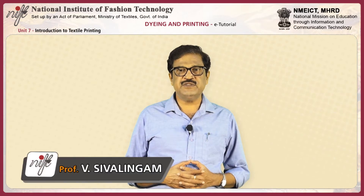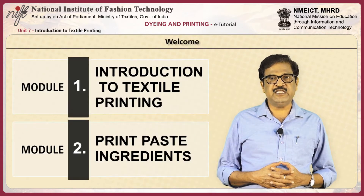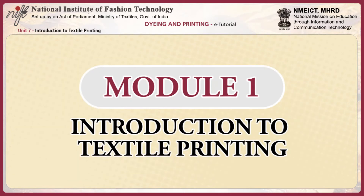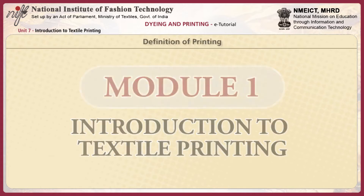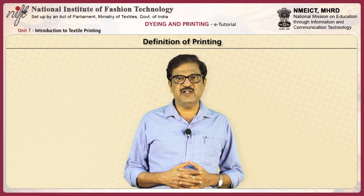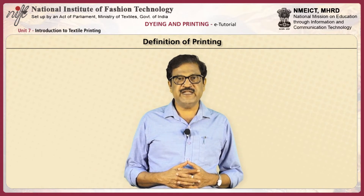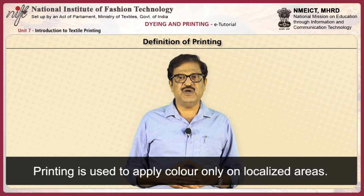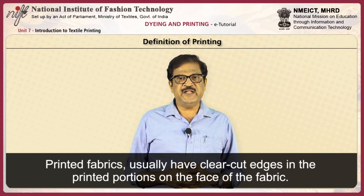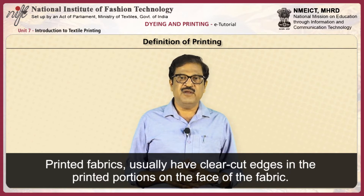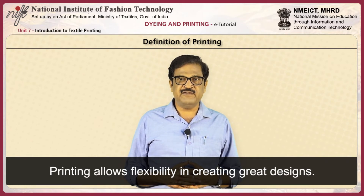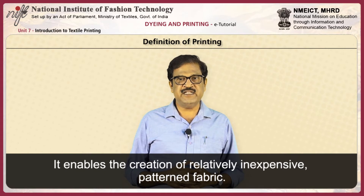This unit introduces you to textile printing and explains the print-paste ingredients used in textile printing. In the process of printing, color designs are developed on fabrics by printing with dyes and pigments in paste form with specially designed machines. Printing is used to apply colors only on localized areas according to the design pattern. Printed fabrics usually have clear-cut edges in the printed portions on the face of the fabric. Printing allows flexibility in creating a variety of designs and enhances the aesthetic value of fabric.